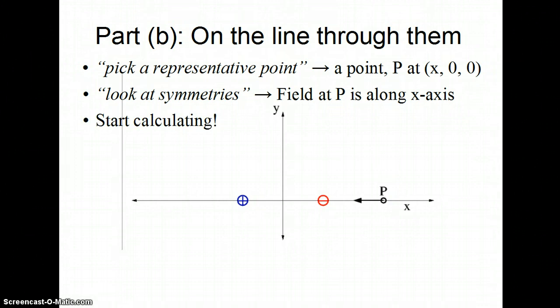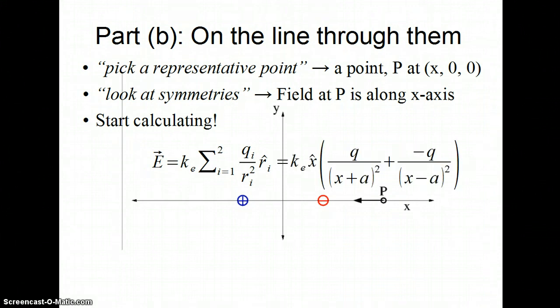I'm ready to start calculating. I have my one formula, and I know there are only two charges. I know that all my radial vectors are along the x-hat direction. I can just write my distances in, x plus a for the positive charge, x minus a for the negative charge, keeping in mind the signs of the charges, and I've got an answer. I'm done. This is all you need.